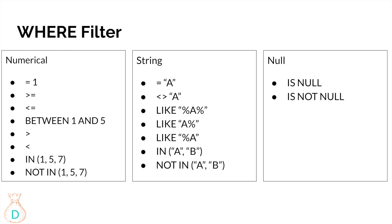You can also use the IN function in SQL, where you specify multiple individual numbers — for example, IN (1, 5, 7) will only include those specific values, not a continuous range. NOT IN (1, 5, 7) will exclude those values. This works for discrete data; if the data is continuous, only those exact values are affected.